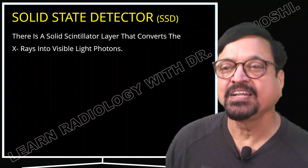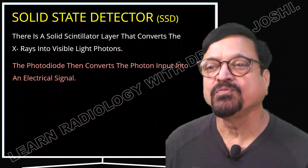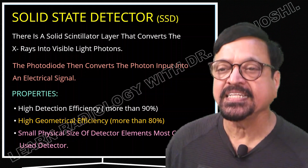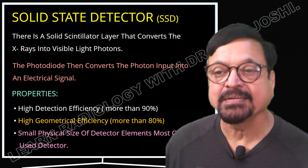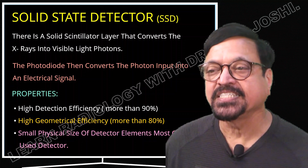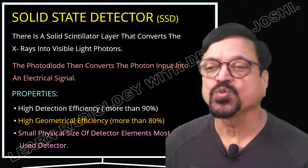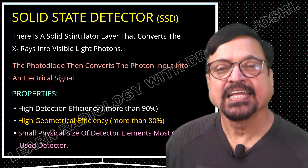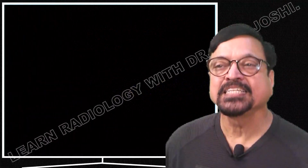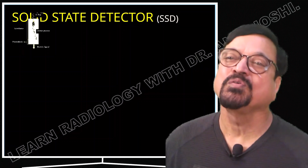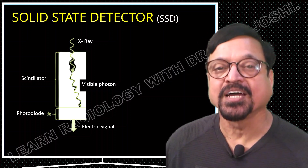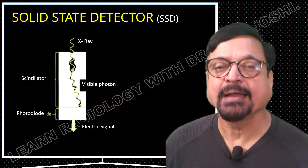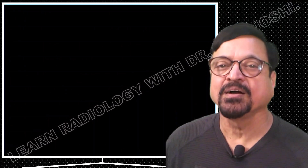There is a solid scintillator layer that converts X-rays into visible light photons. The photodiodes then convert the photon input into electrical signals shown on the monitor. These detectors have high detection efficiency of more than 90%, high geometric efficiency of more than 80%, and small physical detector element size, making them the most commonly used detector — due to their small size, high efficiency, ability to fit more in number, and economical cost.